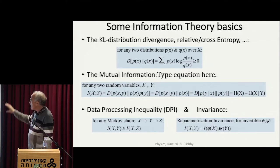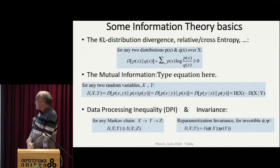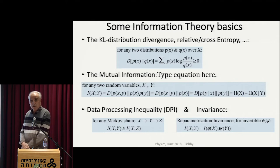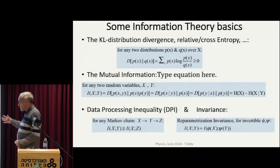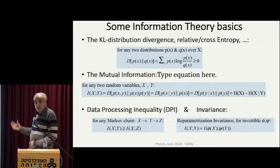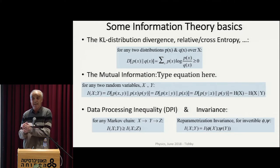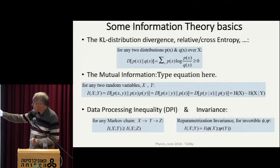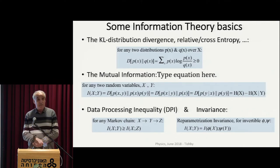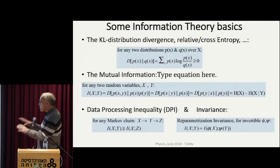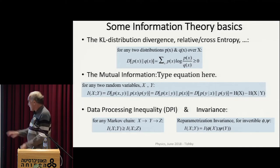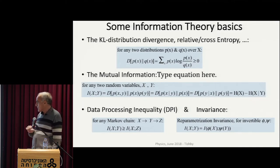I'm going to focus on this notion of mutual information, which is essentially the entropy of X minus the entropy removed from X when I know Y — how much uncertainty I lose when I know Y about X. This is going to be zero if X and Y are independent.